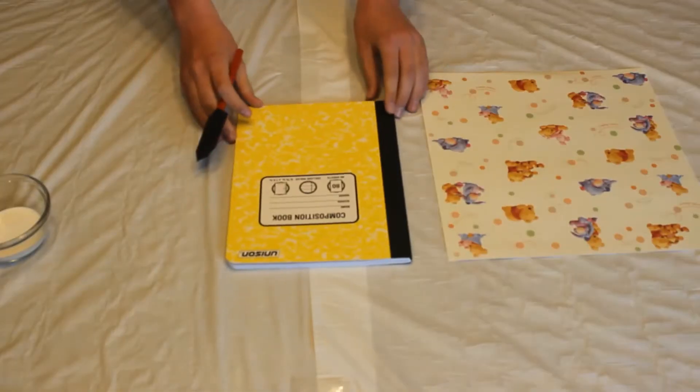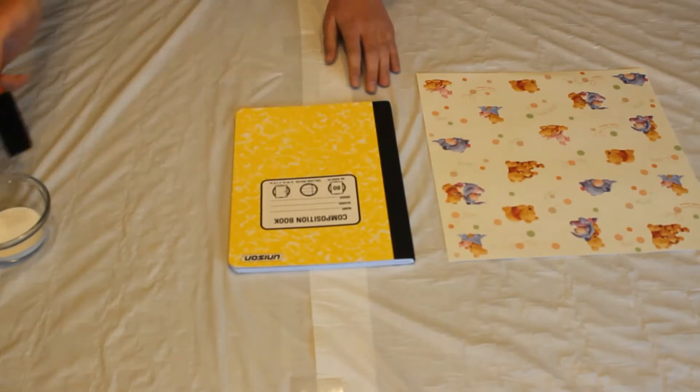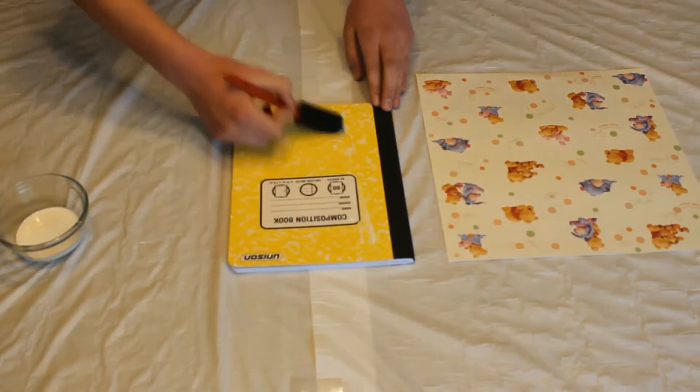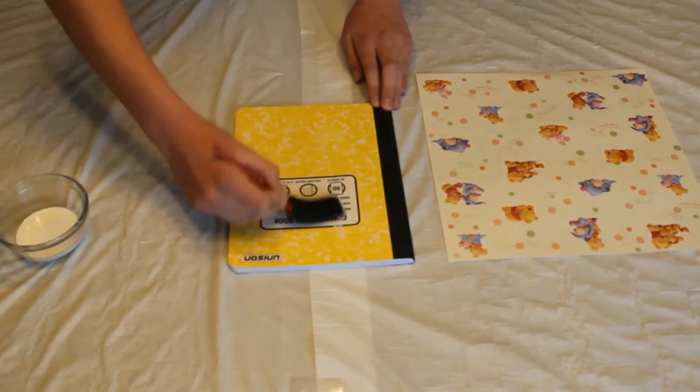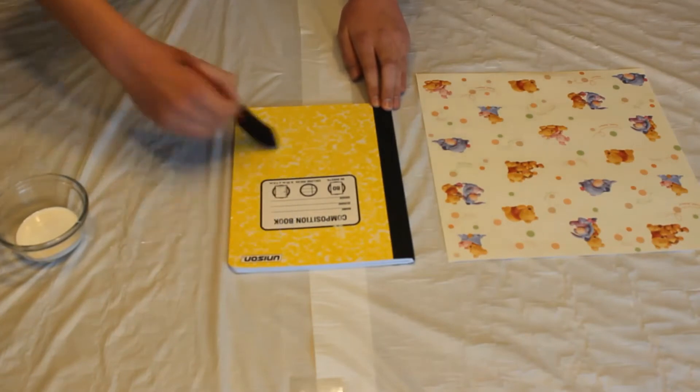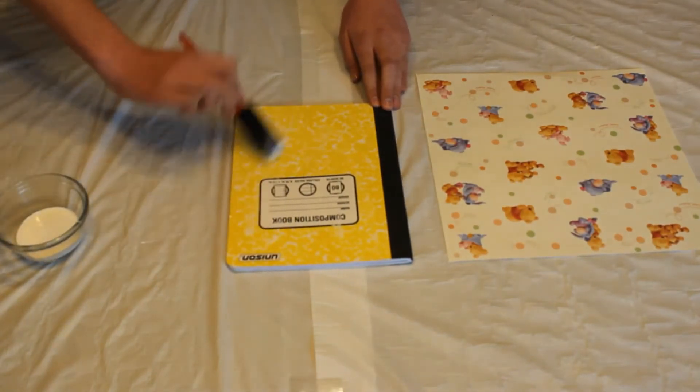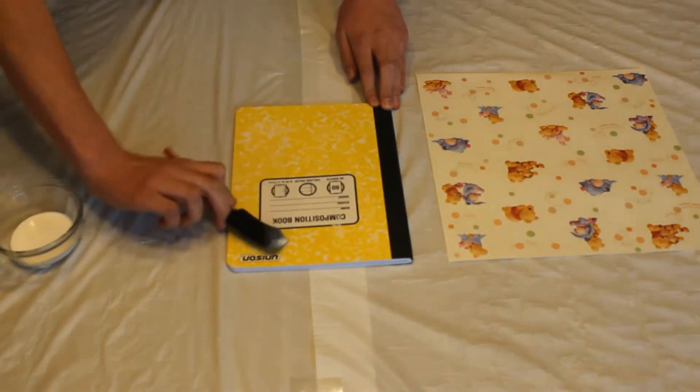So you'll have your composition notebook in the middle, your mod podge over here, and your paper right here. Take a little bit of mod podge and cover the entire paper. And remember, if there are some glops or chunks, you need to get those off and spread them around.